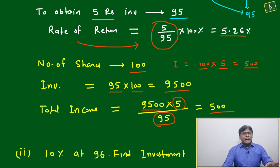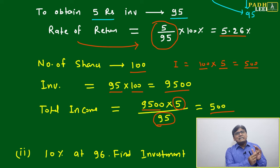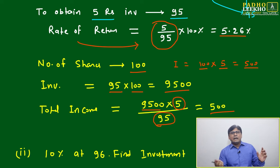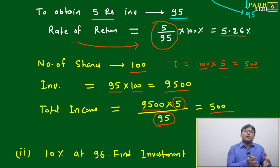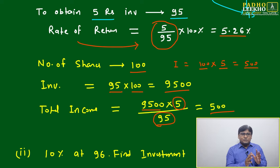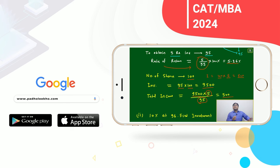So there are three to four types of questions, and you must be aware of these six variables: number of shares, market value, dividend percentage, total income, total investment, and rate of return. These six variables only will be interrelated in complicated ways, and statements will be given in complex, story-type wording. You must be careful — take out the mathematics, leave the story. That is the purpose, especially for CAT preparation students.